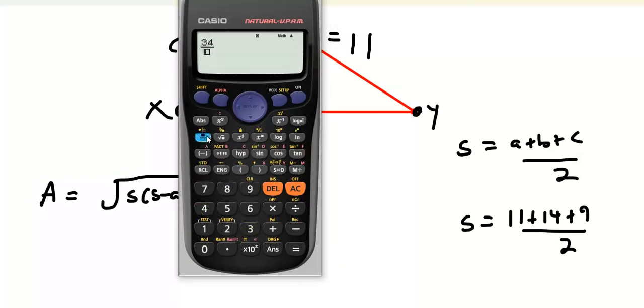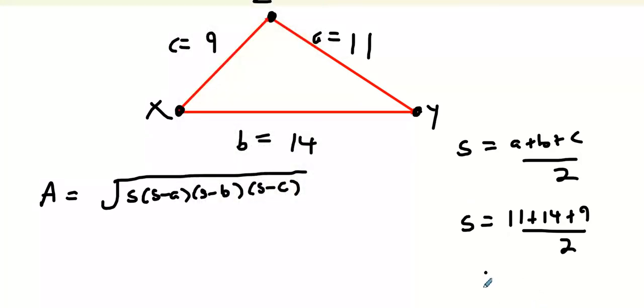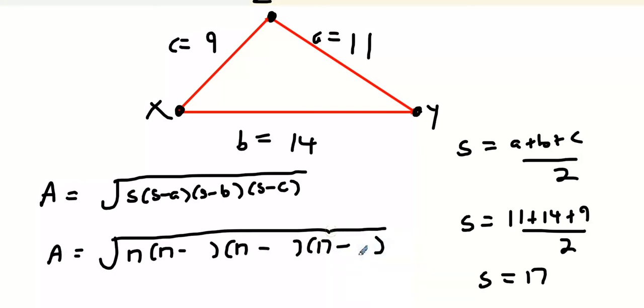Our s value is going to be 11 plus 14 plus 9 all divided by 2. So that's going to be 34 divided by 2, so it's going to be 17. Our s value is going to be 17. Now what the s value can then do is you put in your s values like so.